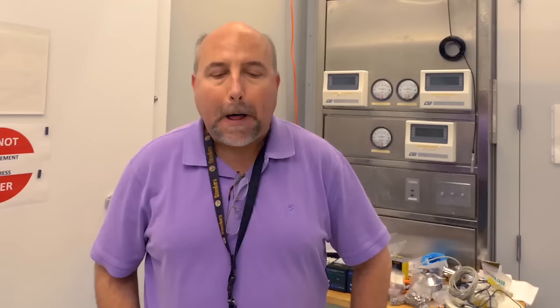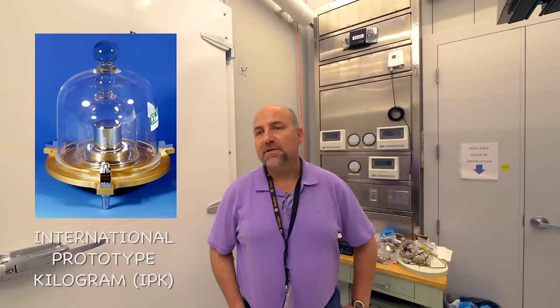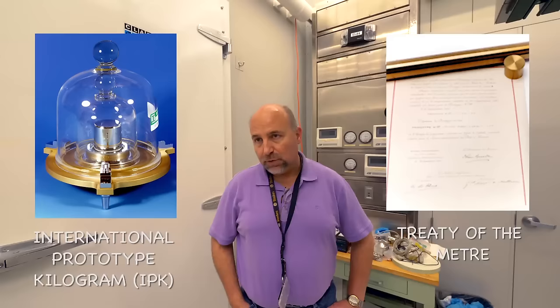The originals were made in the 1880s. There were 40 of them that were brethren of the International Prototype Kilogram and these 40 were distributed to the signatories of the Treaty of the Meter. The United States was given two: K4 and K20.